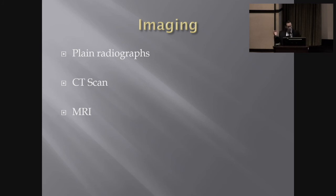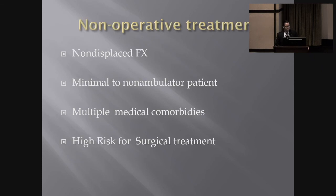For diagnosis, plain radiographs are sufficient most of the time. If there are concerns, a CT scan is obtained. Often in the elderly, if you're suspicious but it's not clear and the patient is having hip pain, MRI is preferred over a traditional bone scan. Non-operative treatment is not very common — it's generally reserved for patients with non-displaced fractures, minimal ambulation, and significant comorbidities that put them at high surgical risk.